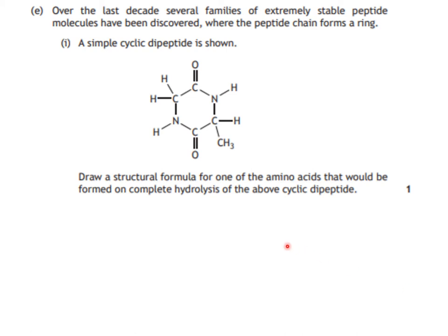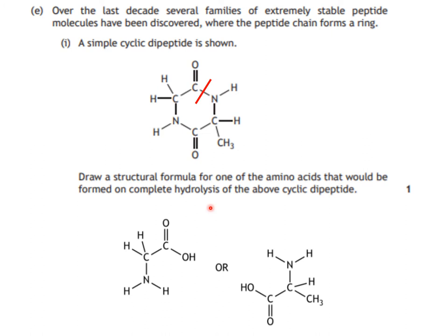It's quite a tough one here. Draw a structural formula for one of the amino acids that will be formed on the complete hydrolysis of the above cyclic dipeptide. This is two amino acids joined together to form a ring structure — the cyclic aspect of this chemical. What we're looking for is hydrolysis: we split the peptide group right between that carbon and that nitrogen. On the carbon side we add an OH group, and on the nitrogen side we add a hydrogen, giving us these two chemicals.